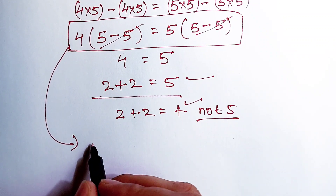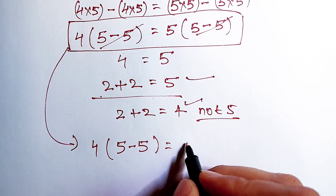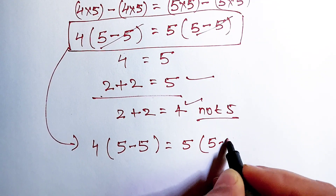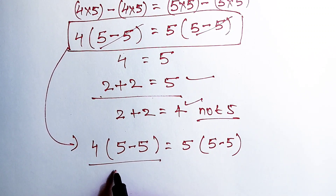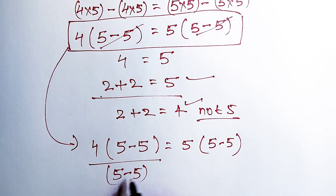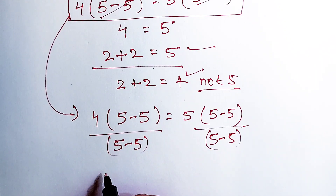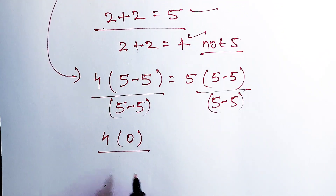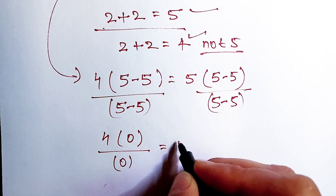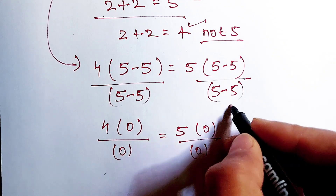Rewriting: 4 multiply (5 minus 5) equals 5 multiply (5 minus 5). Here, what we did was cancel out this term with this term. But if we divide both sides by (5 minus 5), what do we get? We get 4 times 0 divided by 0, and 5 times 0 divided by 0.